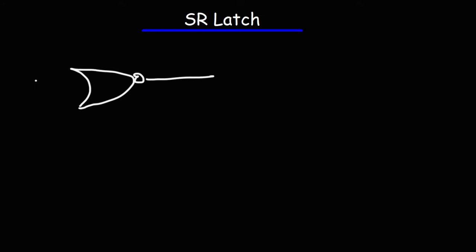Today we're going to talk about a circuit known as the SR latch. But before we get into that, let's review the truth table of the NOR gate. This is the electrical symbol for the NOR gate. We have inputs A and B with the output, which we'll call C.